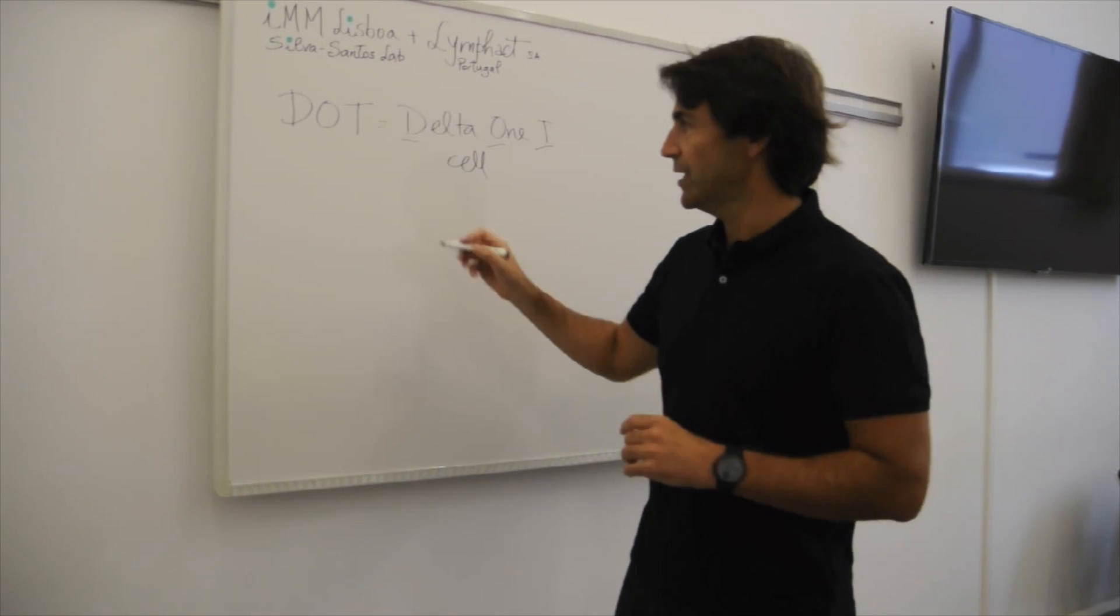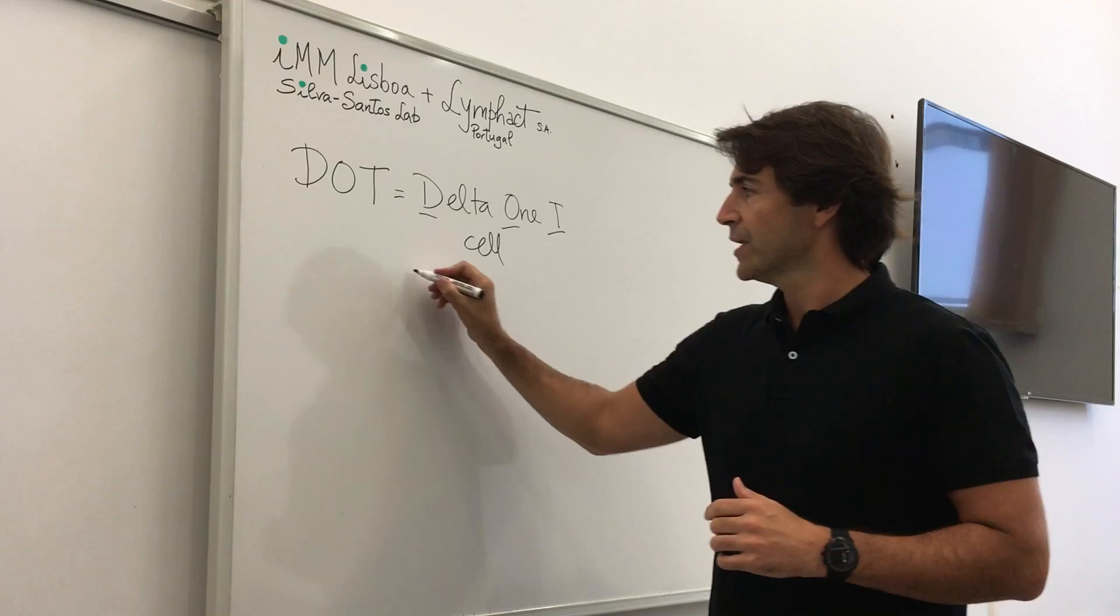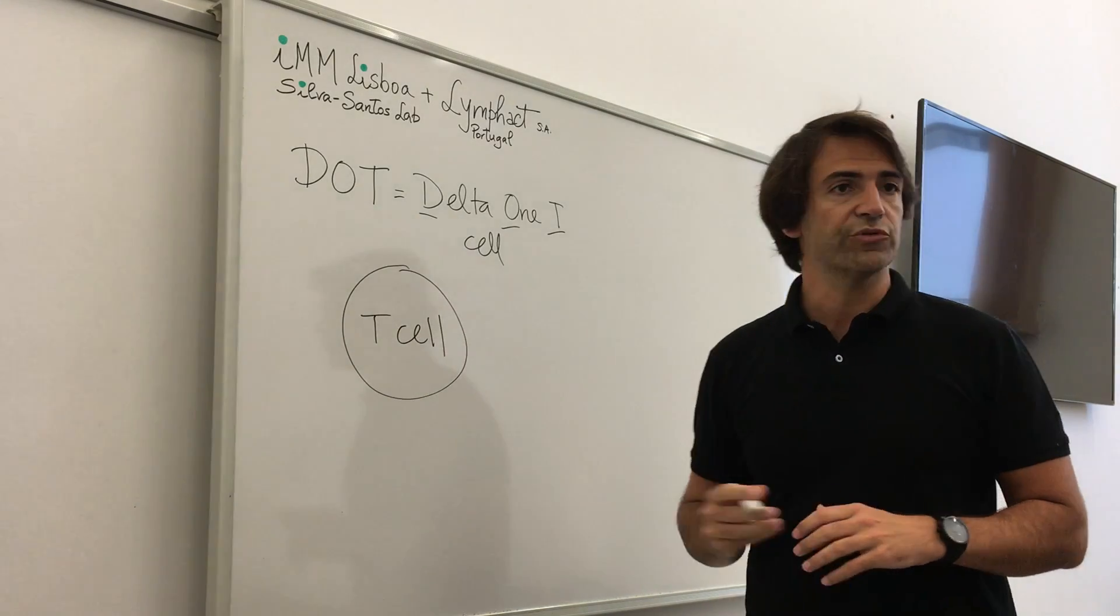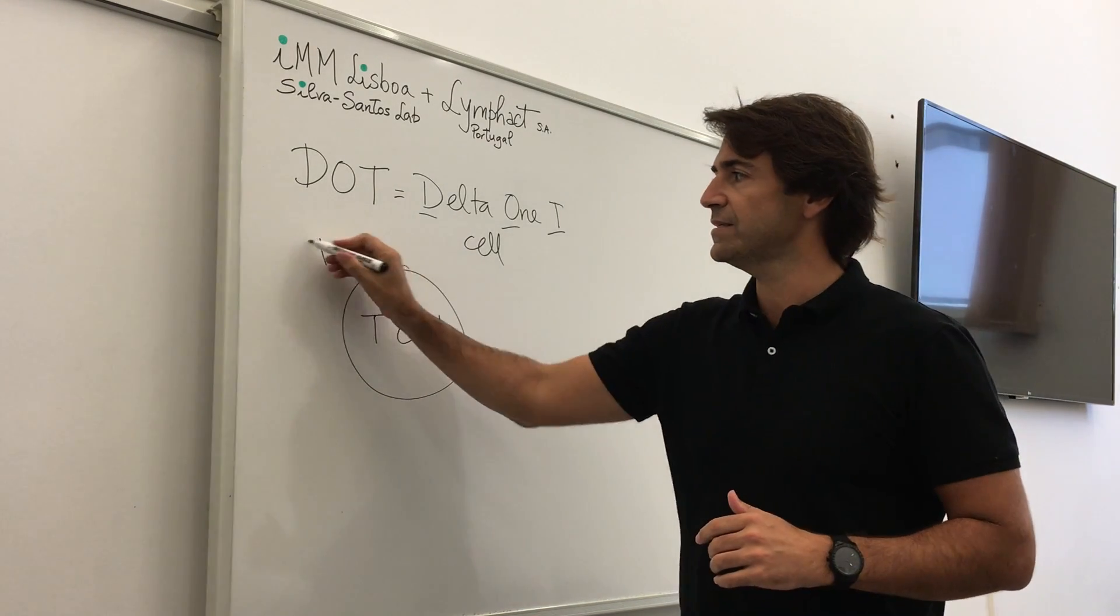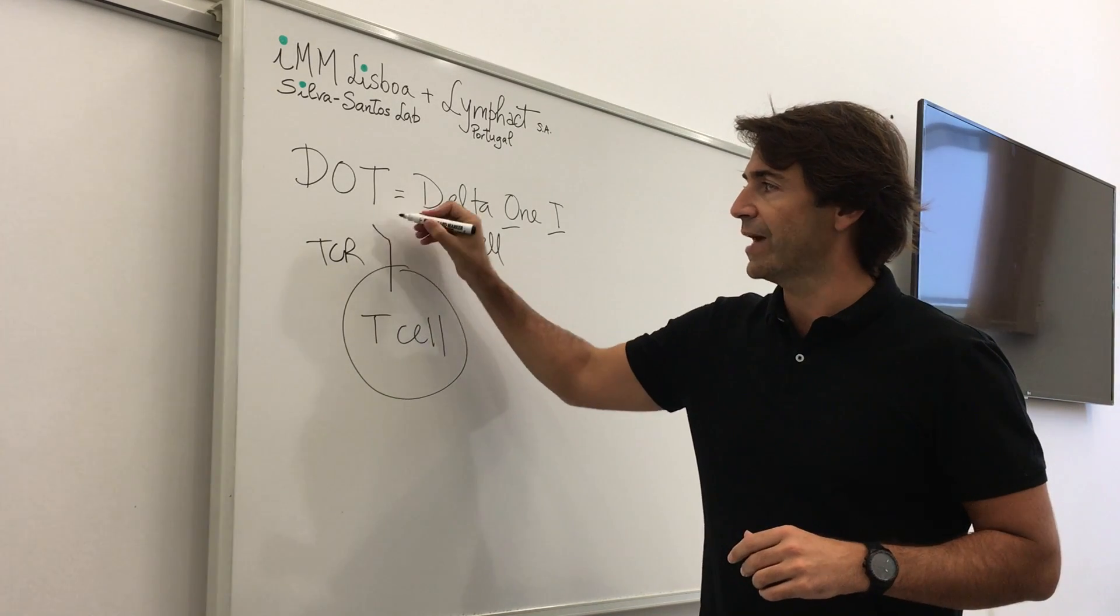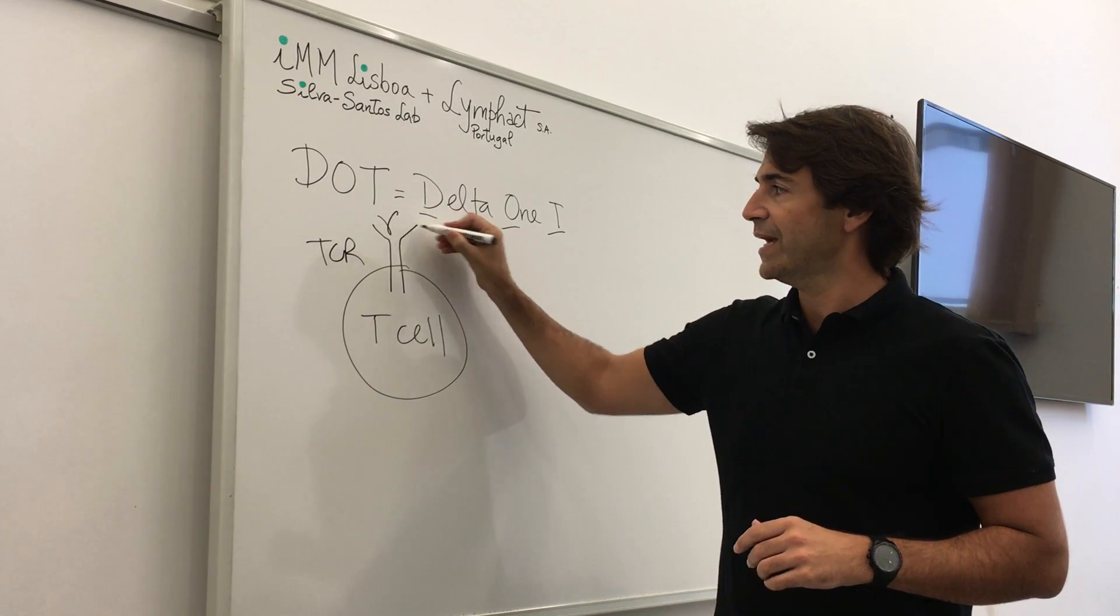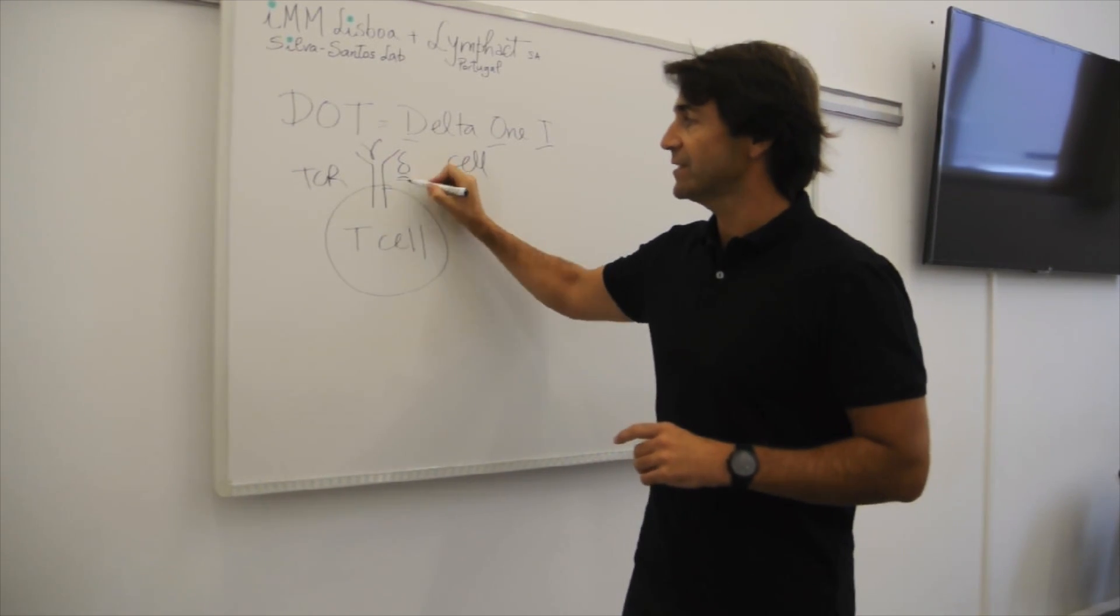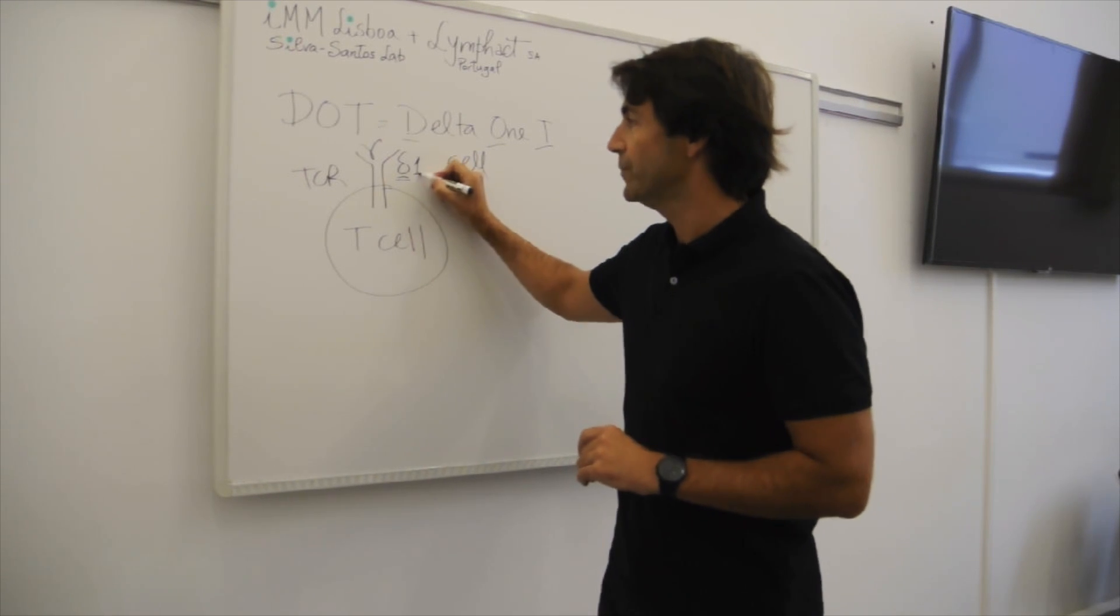And so what is a DOT cell? A DOT cell is a T cell type. So T cells have a signature receptor which we call the T cell receptor, the TCR, that has two different chains. In this case it will have a gamma and a delta chain. And Delta 1 T cells have a delta chain of a particular type, the so-called Delta 1.